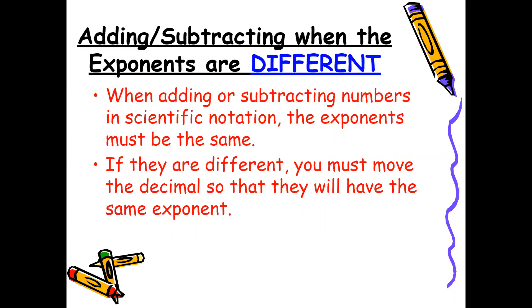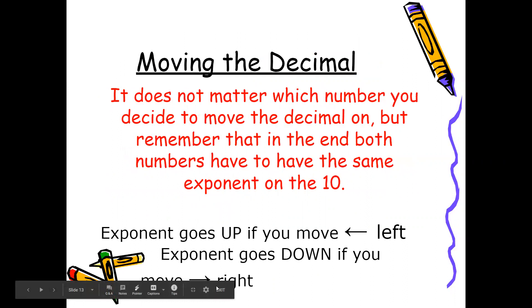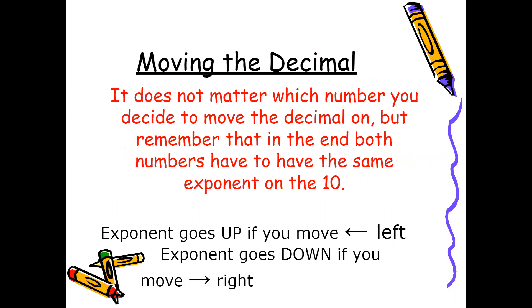When moving the decimal, it does not matter which number you decide to move the decimal on, but remember that in the end both numbers have to have the same exponent on the 10. Keep this rule in mind: at the bottom, exponents go up. If you go up, your decimal has to move to the left. If you go down, you must move to the right.